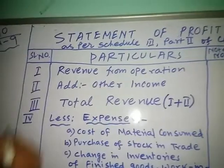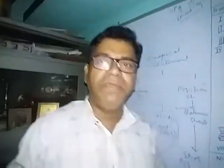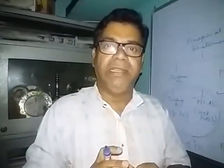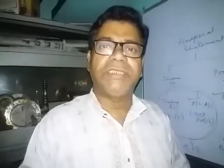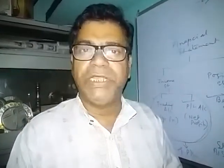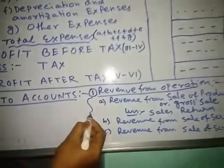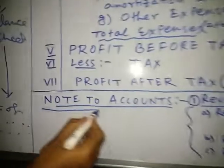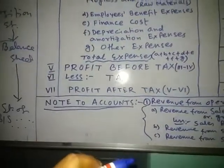First, you have to write the revenue from operations. Revenue from operations means the gross sales — the total sales of the company. Revenue from operations will be calculated separately in the note accounts. Whatever you have prepared in the balance sheet, no item will be coming here — only the heading and the summary.